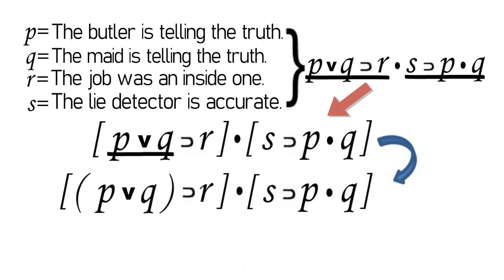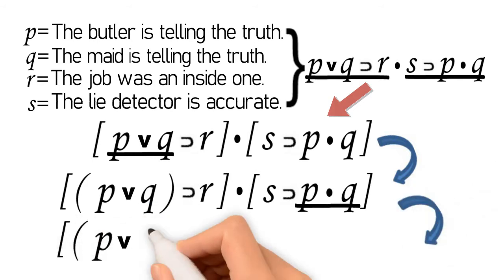Then next, let us punctuate the second conjunct. Since it is stated in the second conjunct that the proposition is a conditional proposition whose consequent is a conjunctive proposition, then we have to punctuate P and Q. Thus, we come up with the following symbol.